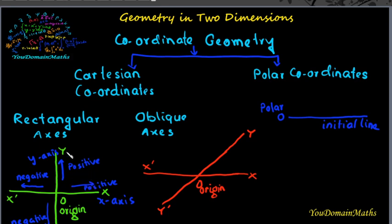These two lines divide the plane into four parts or four quadrants: x, o, y; x-dash, o, y; x-dash, o, y-dash; and x, o, y-dash. This gives the first quadrant, second quadrant, third quadrant, and fourth quadrant.